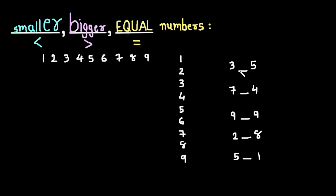Here we can see 3 and 5. As you know, 3 is spoken first and then we speak 5. So we can say 3 is smaller than 5 — we will use this symbol. 3 is less than 5.